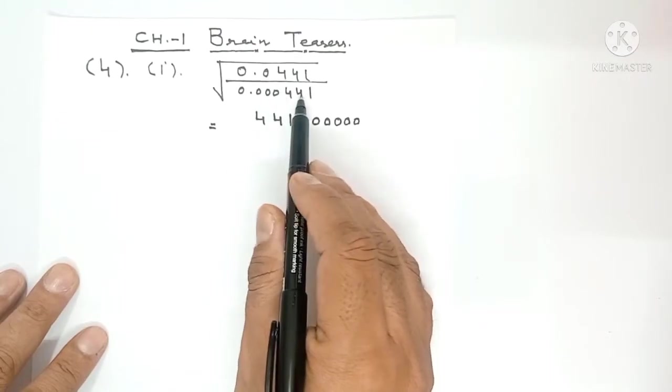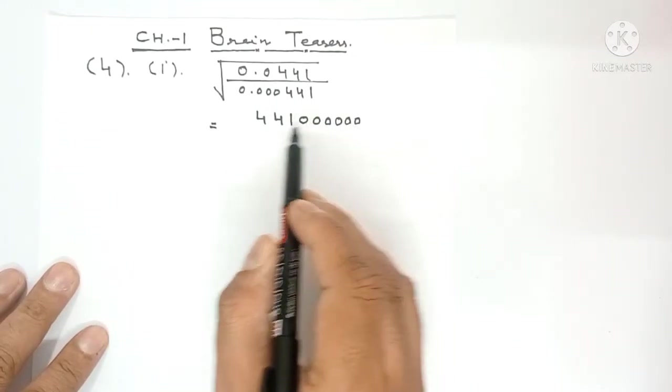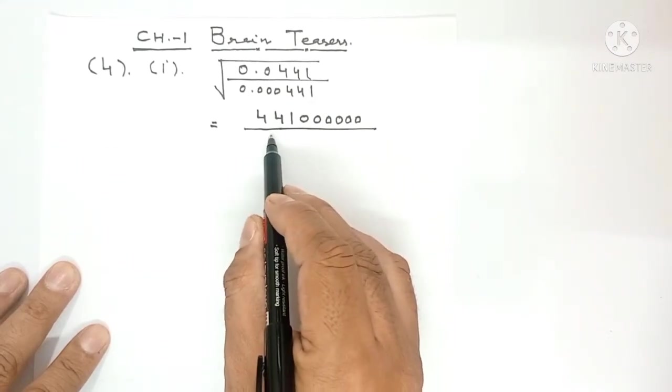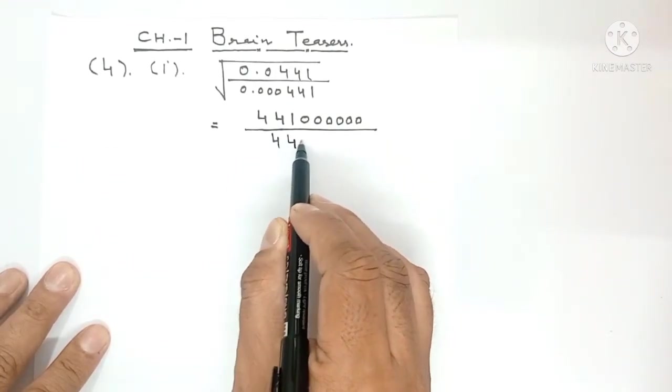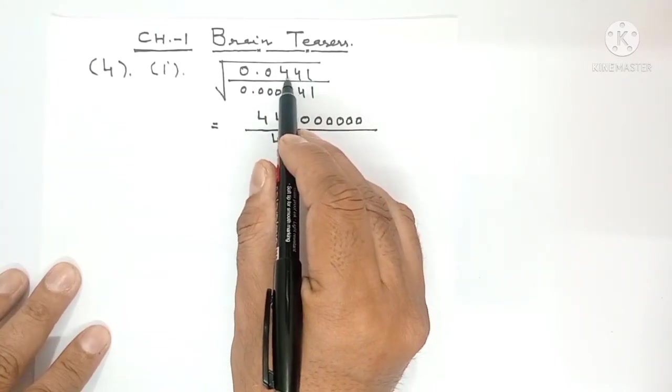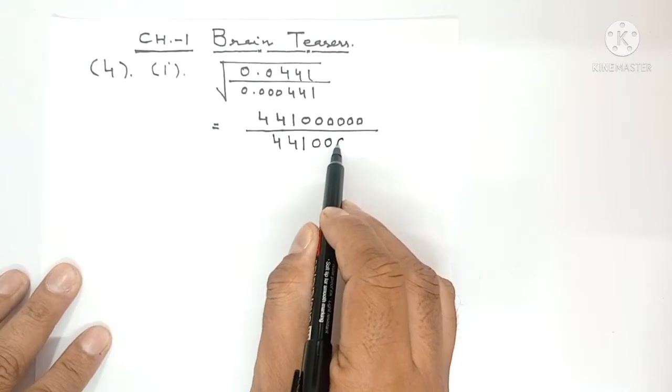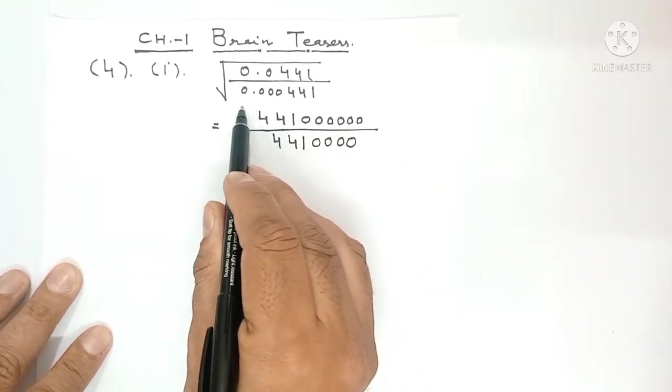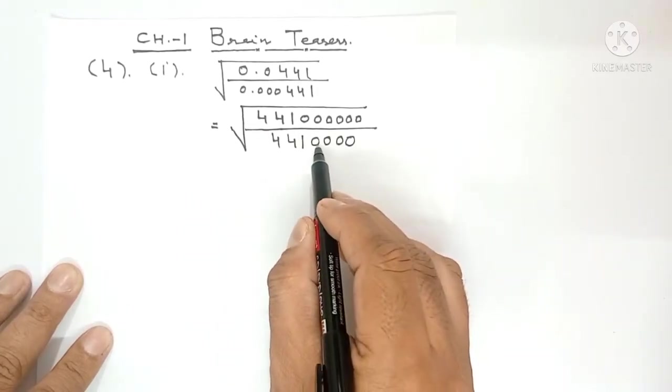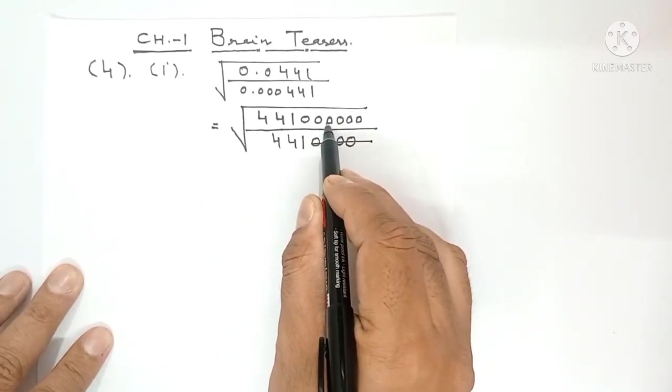So whatever digits back the decimal was, that many zeros you write on top. In the denominator, write the major number 441. Now count how many digits back the decimal is: 1, 2, 3, 4. So write that many zeros there under the root sign.